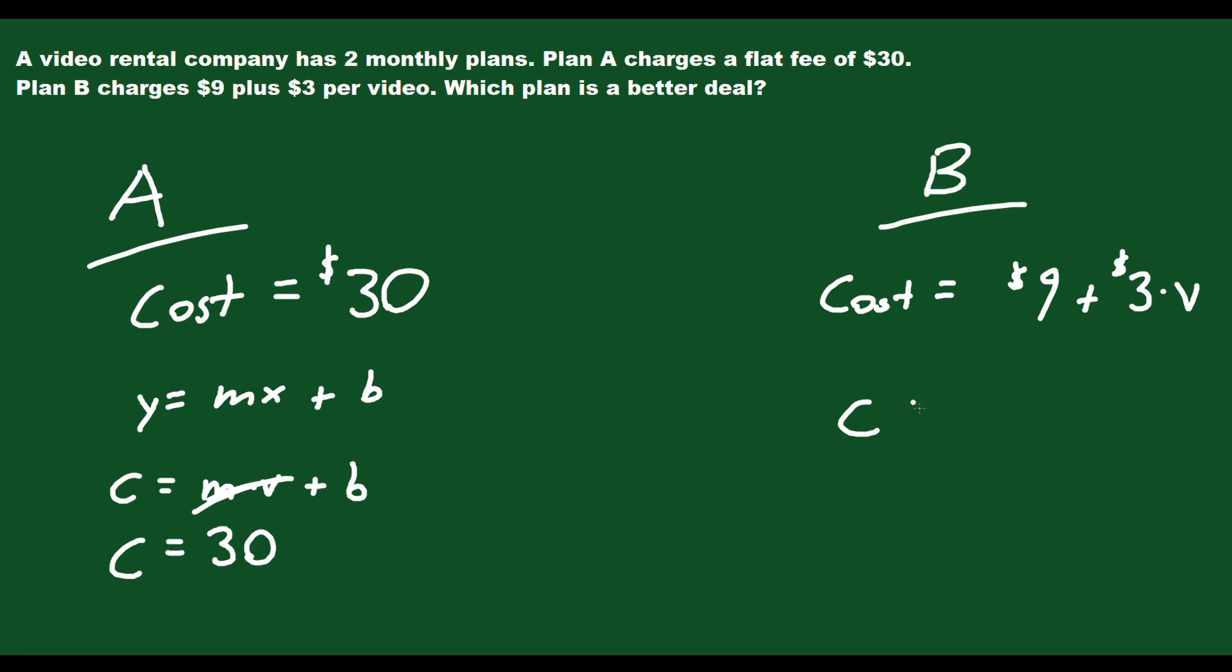And so if you want to write this as a linear equation, you could say c is equal to 3v plus 9, just to make it look more like y equals mx plus b.